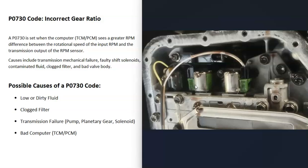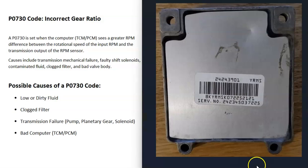The last thing on the list is a computer failure — an issue with the transmission control module or the powertrain control module. This isn't too common; usually a P0730 code points to an issue with the transmission itself, but it is possible that there's a problem with one of the computers.